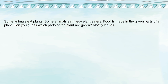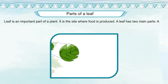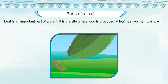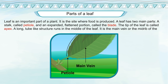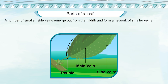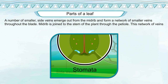Food is made in the green parts of a plant — mostly leaves. A leaf is an important part of a plant; it is the site where food is produced. A leaf has two main parts: a stalk called the petiole, and an expanded flattened portion called the blade. The tip of the leaf is called the apex. A long tube-like structure runs in the middle of the leaf — it is the main vein or midrib of the leaf. A number of smaller side veins emerge from the midrib and form a network throughout the blade.